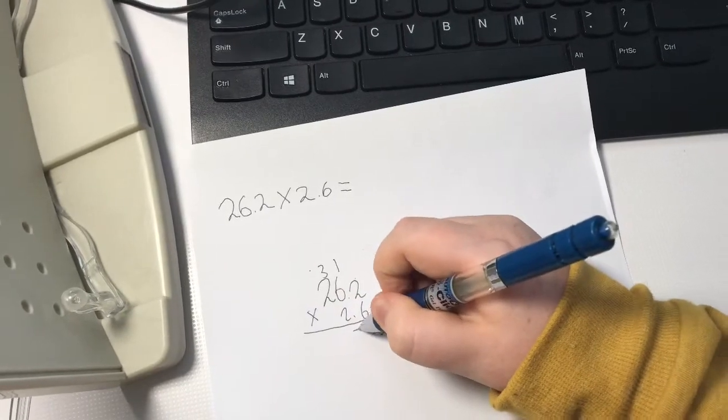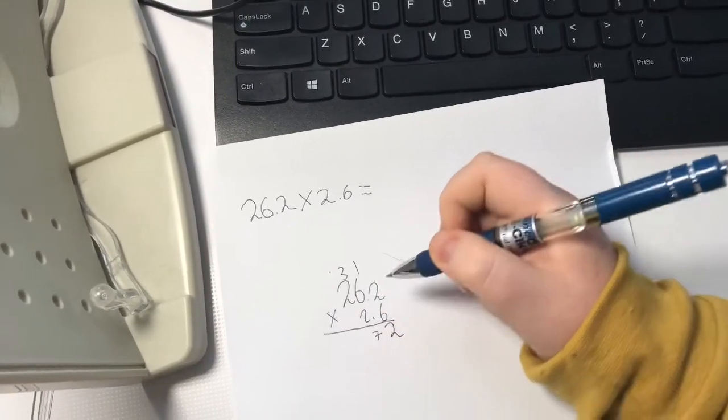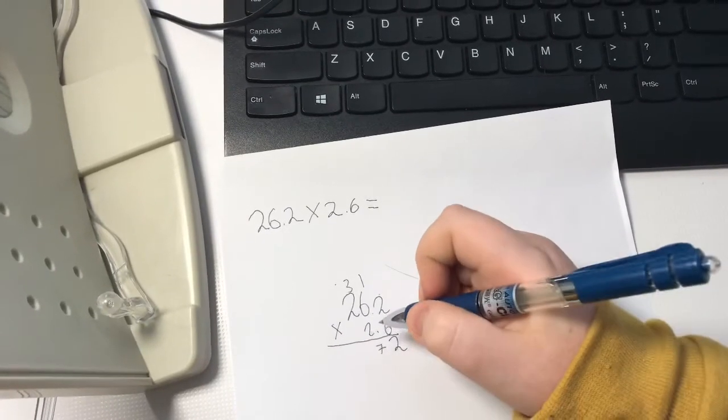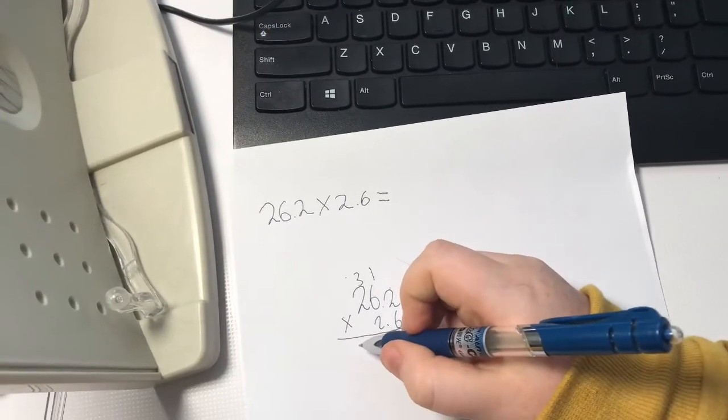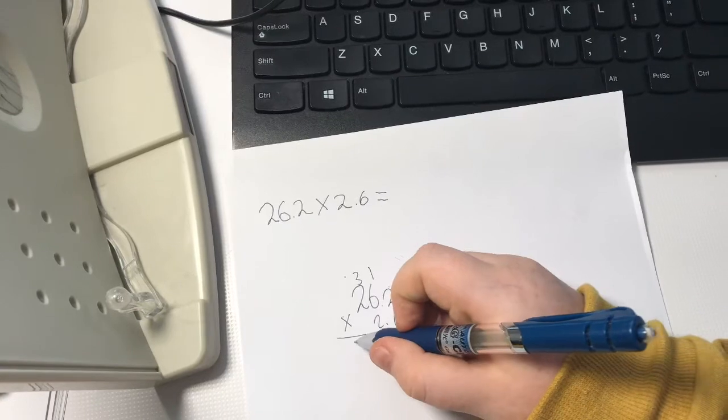2 times 6 will be 14, actually no it will be 12, 12 plus 3 will be 15.